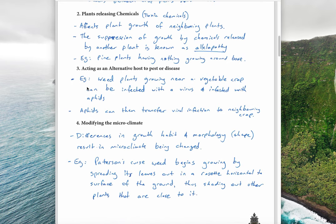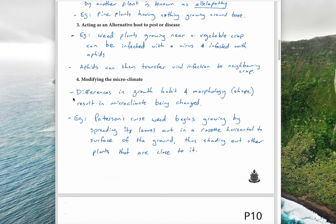Acting as an alternative host to pest or disease: for example, weed plants growing near a vegetable crop can be infected with a virus and infested with aphids. The aphids can then transfer the viral infection to the neighboring crop. That is another form of competition between plants.